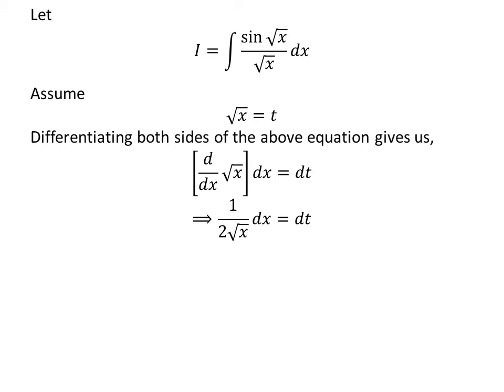As derivative of square root of x is 1 upon 2 times square root of x, so 1 upon 2 times square root of x times differential of x is equal to differential of t.